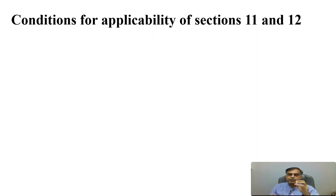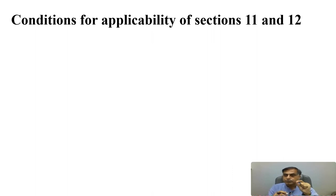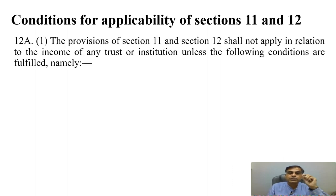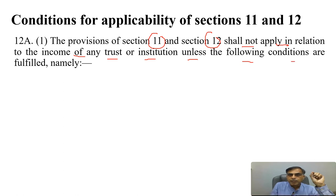Why is there so much emphasis on the applicability of Form 10B and ensuring it is duly filed? I am putting up before you the relevant extracts from section 12A of the Income Tax Act 1961. The title of this section is 'Conditions for applicability of section 11 and 12.' If a trust wants to claim exemption under income tax law, it is available under the provisions of section 11 and 12. To get this exemption, the trust must satisfy certain conditions under section 12A subsection 1.